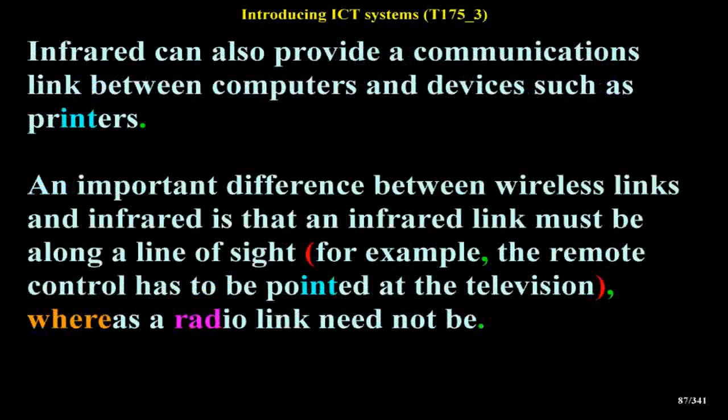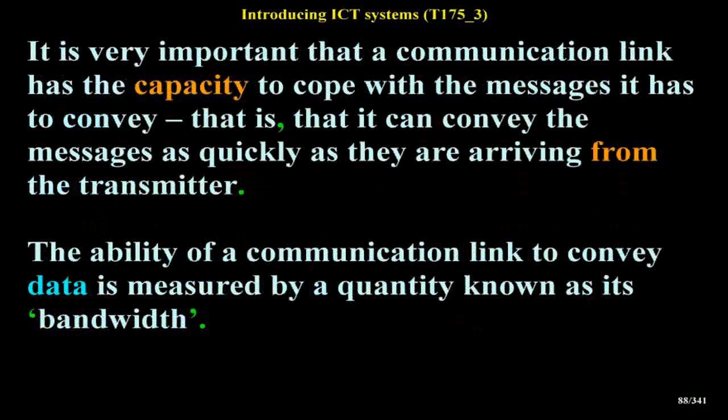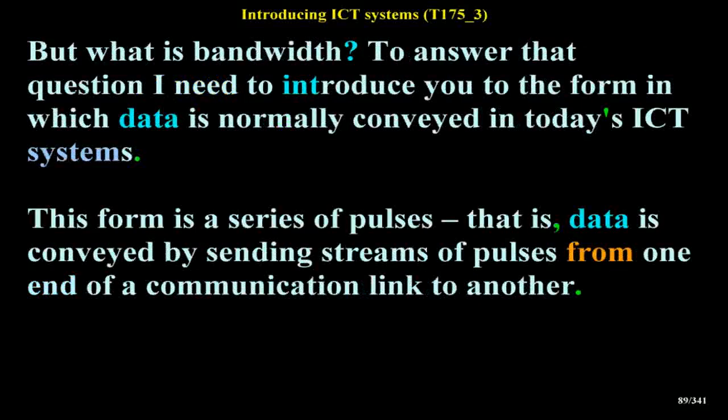Infrared can also provide a communications link between computers and devices such as printers. An important difference between wireless links and infrared is that an infrared link must be along a line of sight — the remote control has to be pointed at the television, whereas a radio link need not be. It is very important that a communication link has the capacity to cope with the messages it has to convey, conveying them as quickly as they arrive from the transmitter. The ability of a communication link to convey data is measured by a quantity known as its bandwidth.